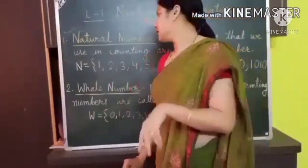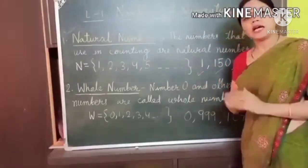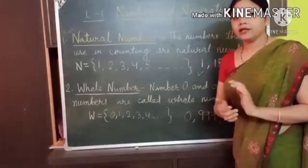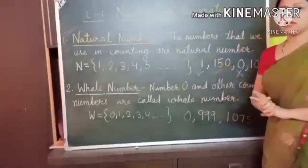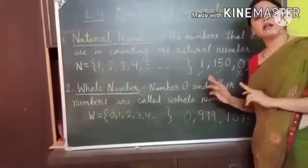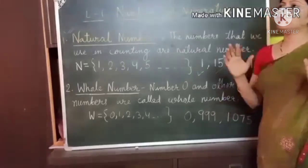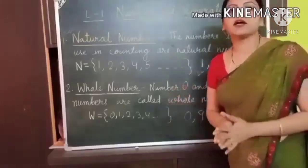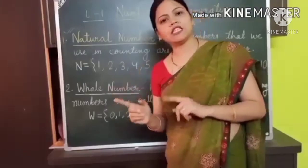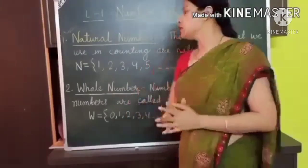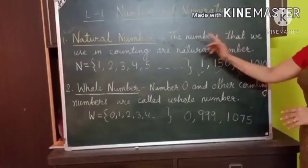Now I will ask you some questions. Is 1 a natural number? Yes, 1 is a natural number. Now tell me — is 150 a natural number? Yes, it is also a natural number, because if you look at the sky, there are several stars. If you start counting, you will definitely reach up to 150. So 150 is also a counting number, meaning a natural number.